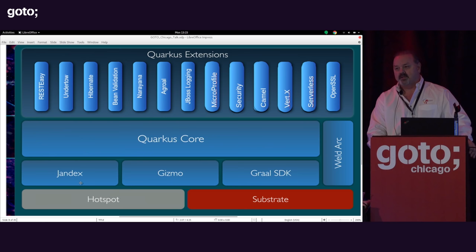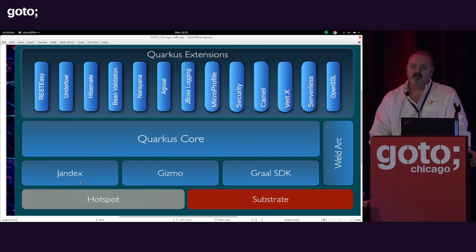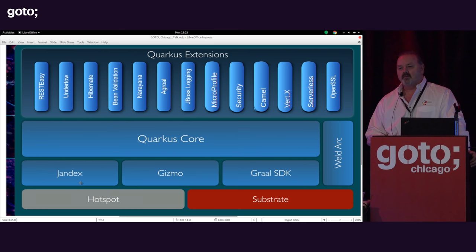That's pretty low-level detail. Typically, very few of our extensions require that level of analysis, but if you do, you have that capability. Then there's integration with the GraalVM SDK, which provides the low-level Substrate APIs doing things like class replacement and registering classes for reflection. We have a custom implementation of CDI called Weld Arc that throws out some of the runtime behavior and dynamicity that CDI has.